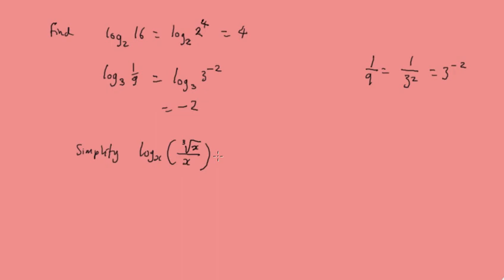We're going to write cube root x over x as a power of x, so that's going to be log x of x to the minus 2 over 3, which is going to give us minus 2 over 3 as the answer.